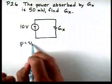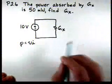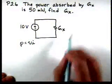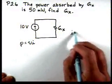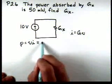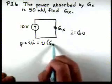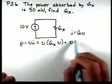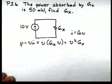P is equal to V times I. And for the conductance, I is equal to G times V. So if we substitute in, we'll have V times GX times V, or V squared times GX.